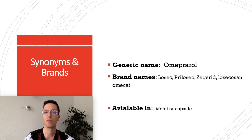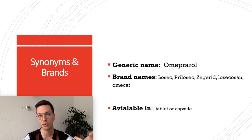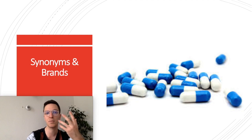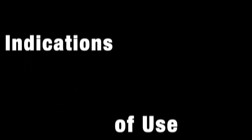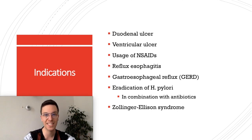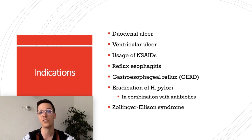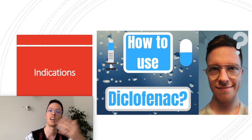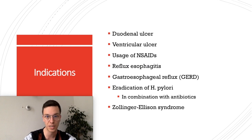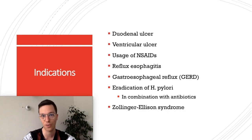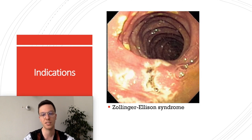First of all, the generic name of this medication is Omeprazole, but it's known under several brand names like Lozac, Prilosec, Zagorid, and many more depending on the country where you live. This medication is available in tablets and capsules and can be taken orally. Indications include ulcers of the stomach or intestines, use alongside NSAIDs like ibuprofen or diclofenac, reflux esophagitis or GERD, eradication of H. pylori (always in combination with antibiotics), and Zollinger-Ellison syndrome.